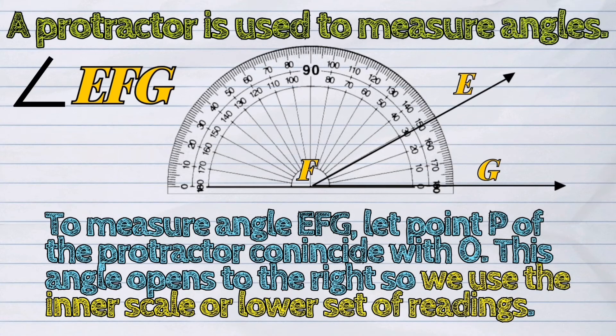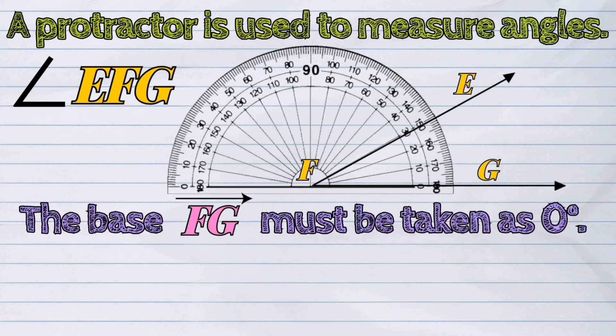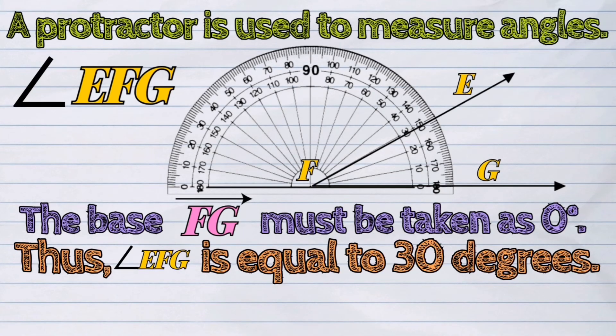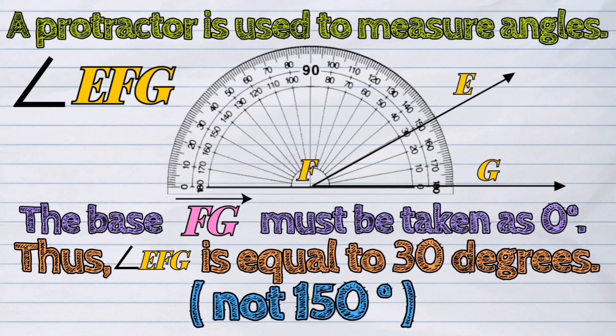The base ray FG must be taken as zero degrees. Thus, angle EFG is equal to 30 degrees, not 150 degrees.